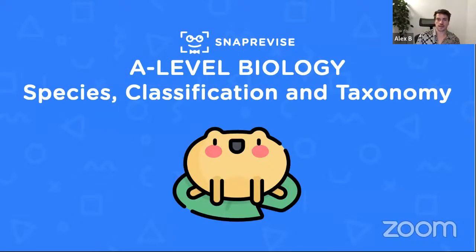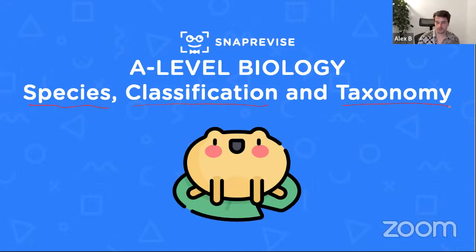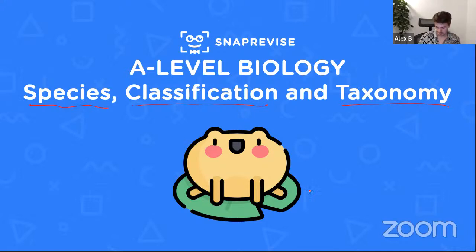I'll share my screen — hopefully you're now looking at a PowerPoint. The aim for today is to go through an AS topic. We're going to look at species, classification, and taxonomy. It's an essential part of the course — maybe not the most exciting part, there are a lot of definitions to learn, but it's relatively straightforward. I'm hoping we can get through all of it in this one-hour session.